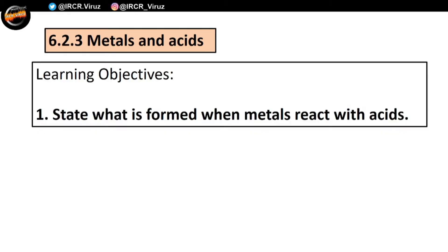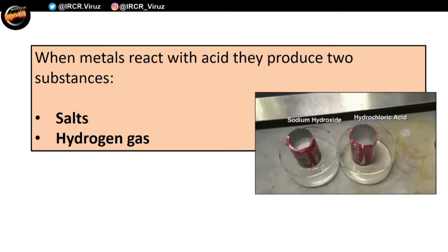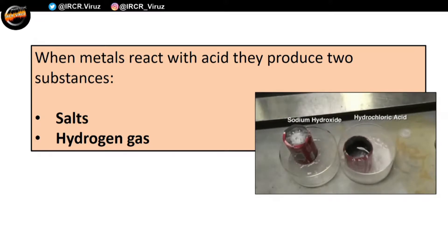Metals and acids. The first learning objective is to state what is formed when metals react with acids. When metals react with acids, they produce two substances: salts and hydrogen gas. The reaction can be described with the following general equation: a metal plus an acid gives you salt and hydrogen.